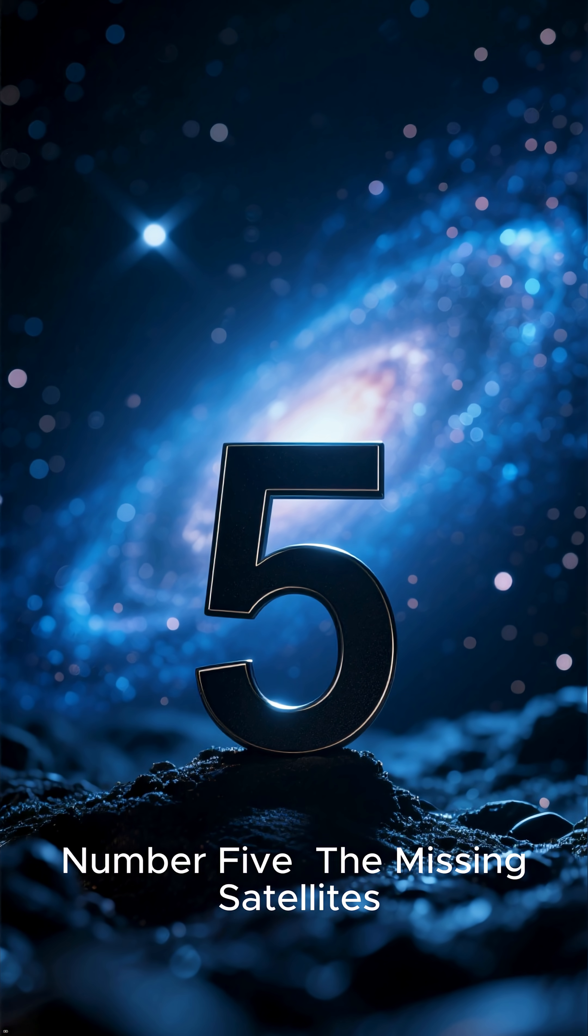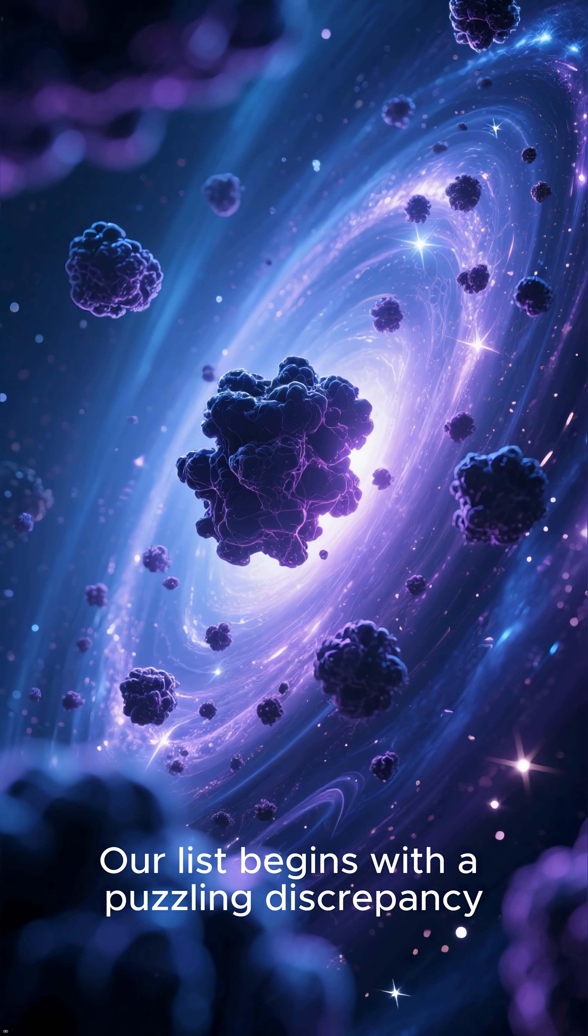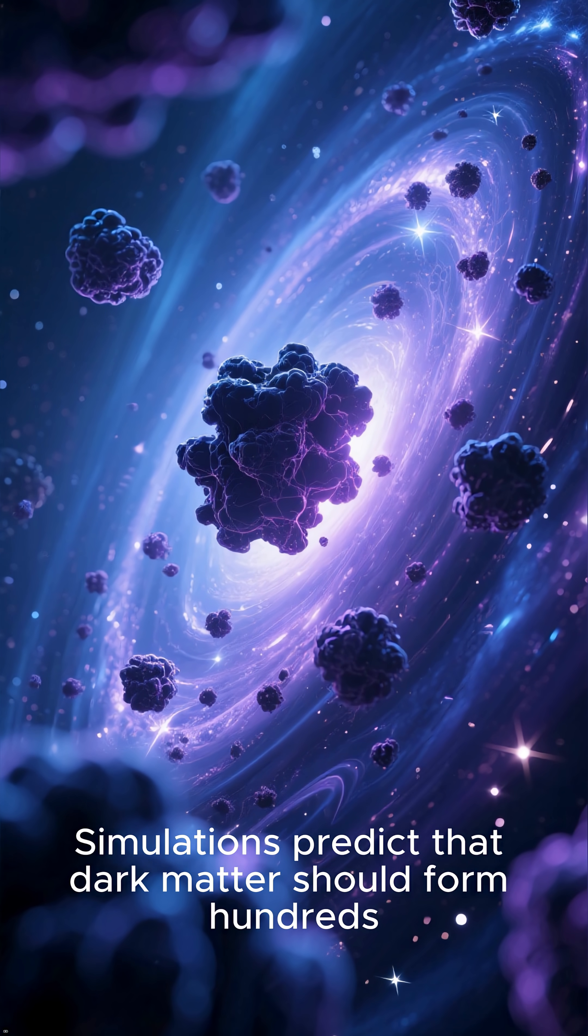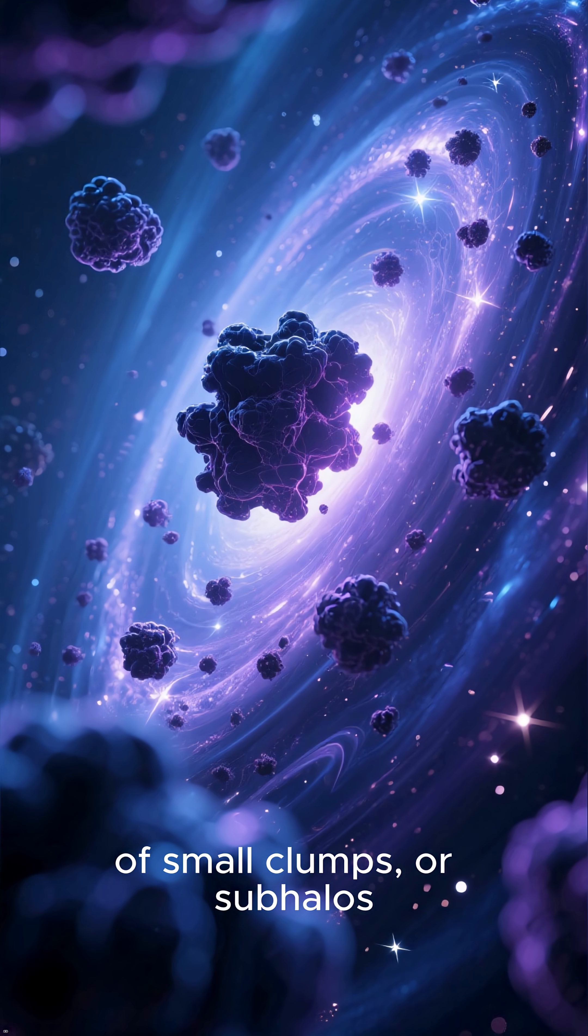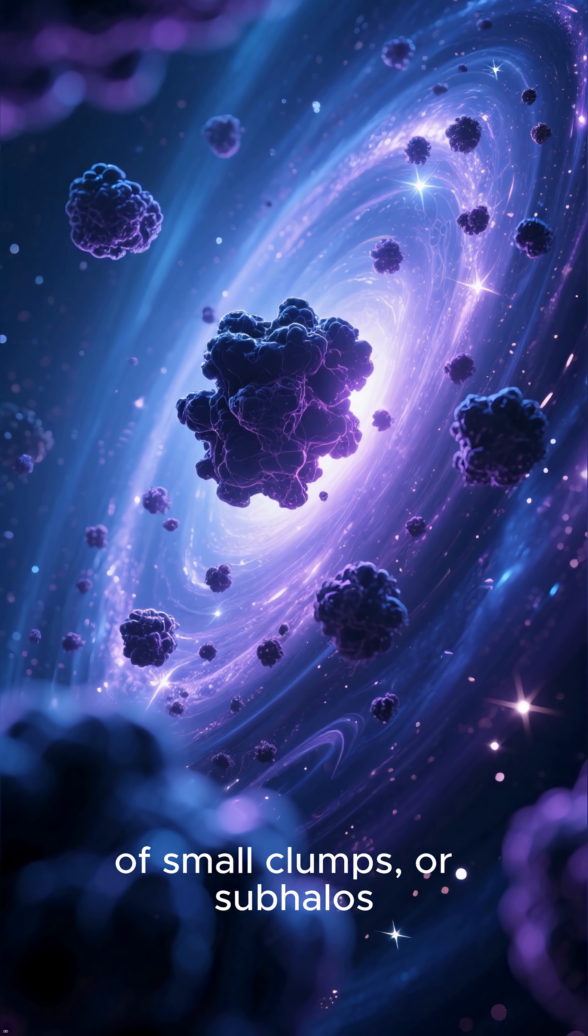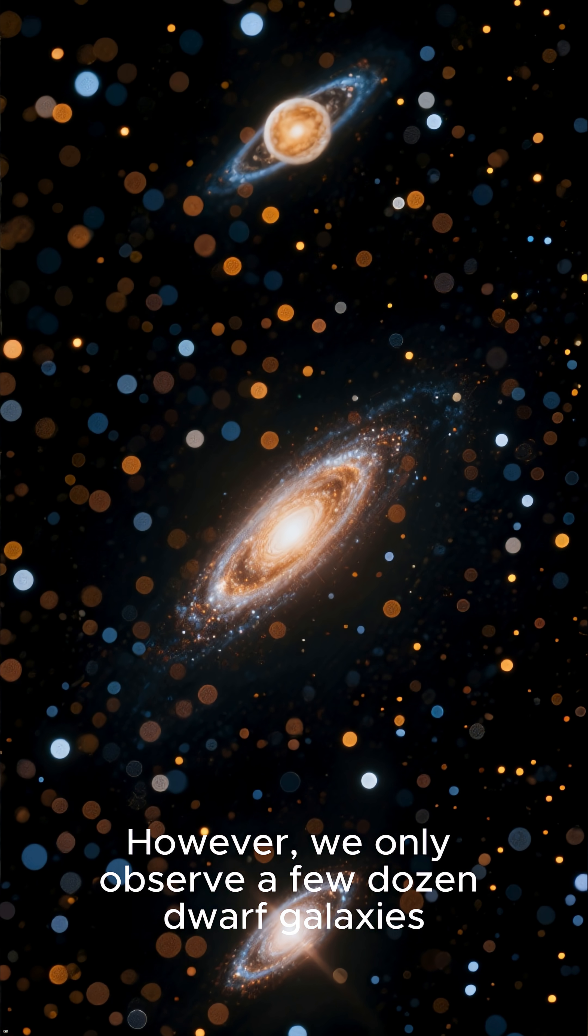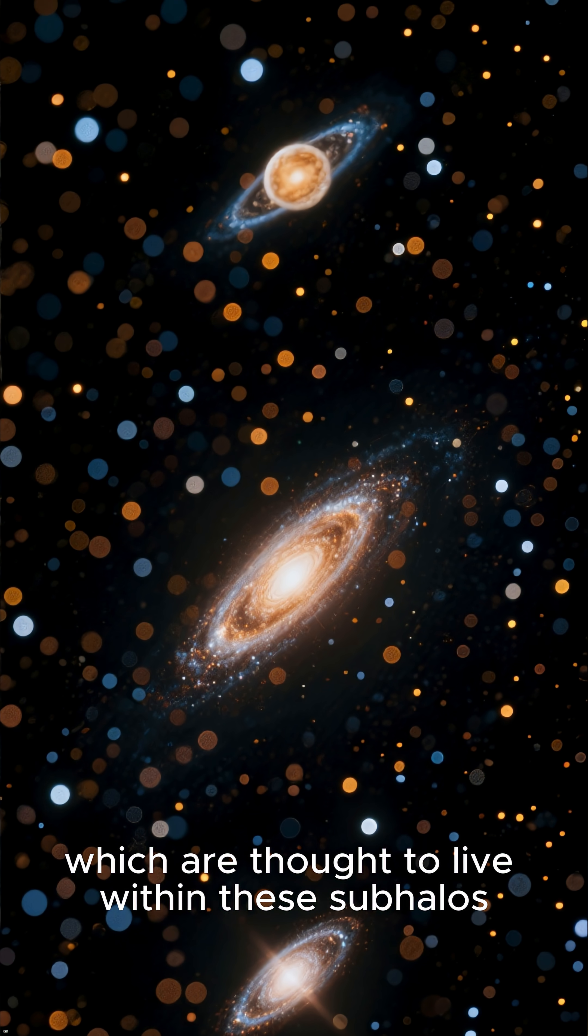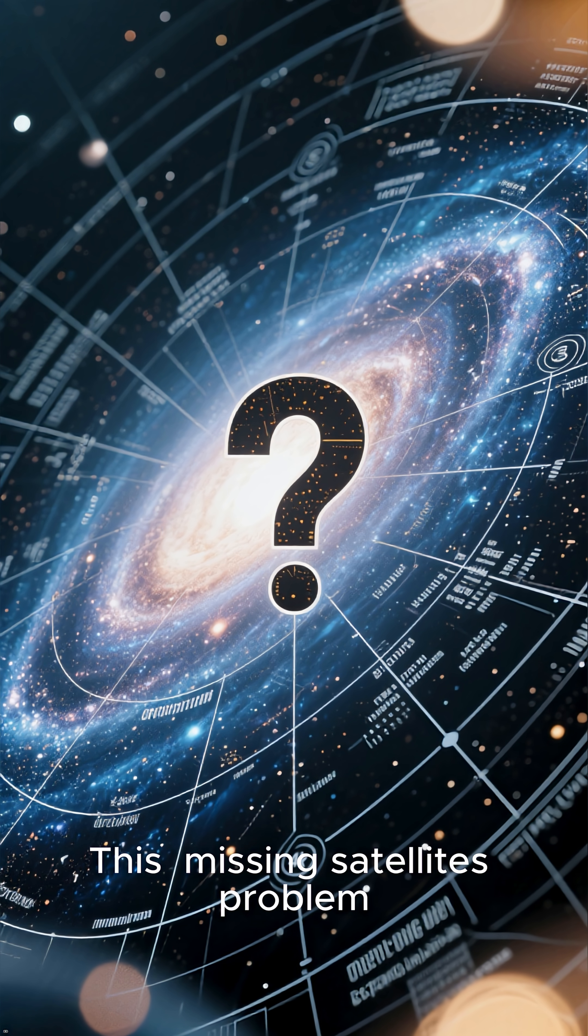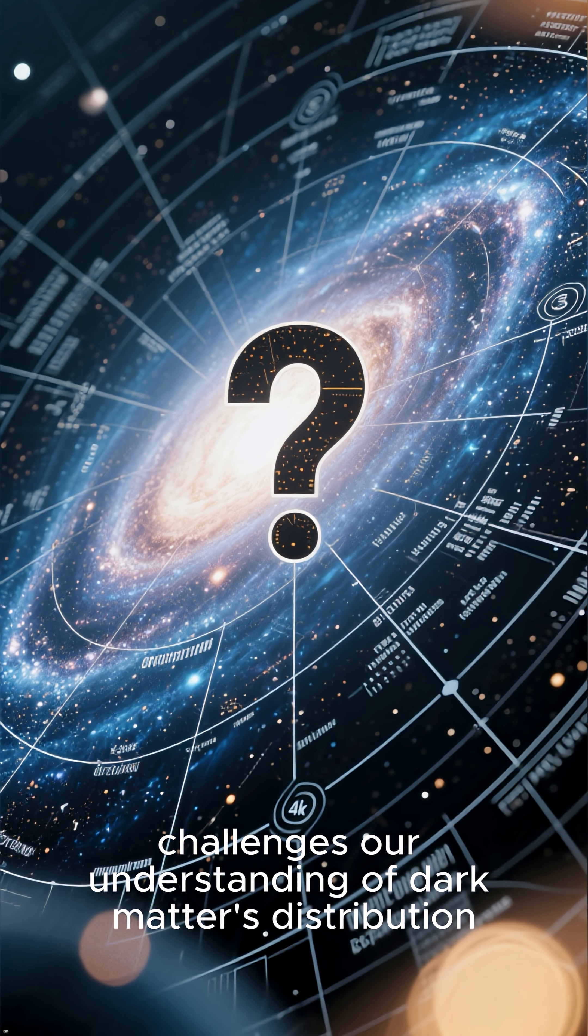Number 5: The Missing Satellites. Our list begins with a puzzling discrepancy. Simulations predict that dark matter should form hundreds, even thousands, of small clumps or subhalos around larger galaxies. However, we only observe a few dozen dwarf galaxies, which are thought to live within these subhalos. This missing satellites problem challenges our understanding of dark matter's distribution.